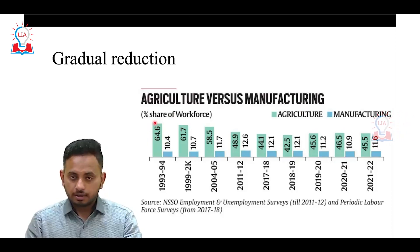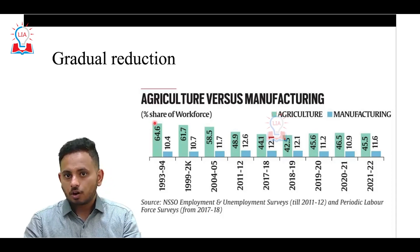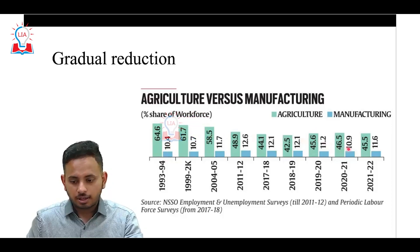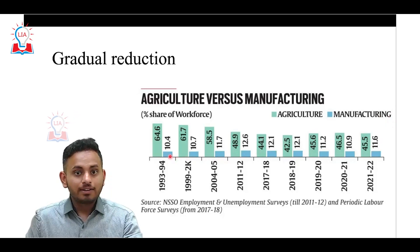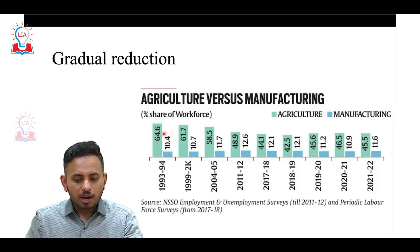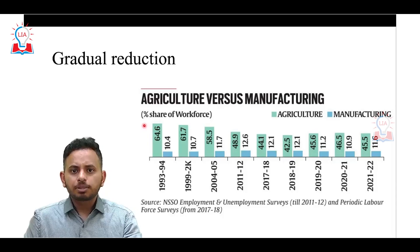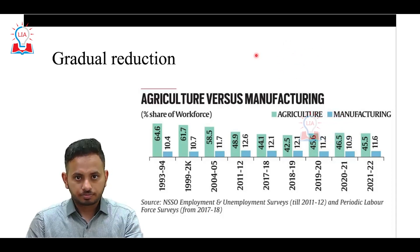In India, the majority of the population was dependent on agriculture before 1991. As soon as the LPG reforms began, the population that left agriculture shifted directly to services — not manufacturing. This is evident in the data: in 1993–94, only 10.4% of the Indian population was dependent on manufacturing, and in 2021–22 it is just 11.6% — roughly just a 1% increase over 25 years. Meanwhile, agriculture saw a 20% reduction, so where did the remaining 19% go?